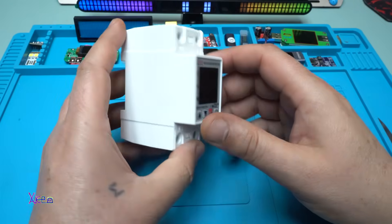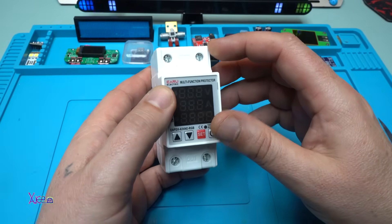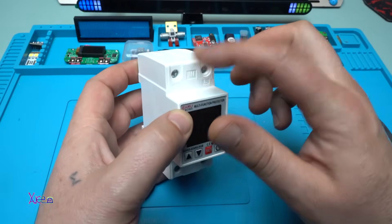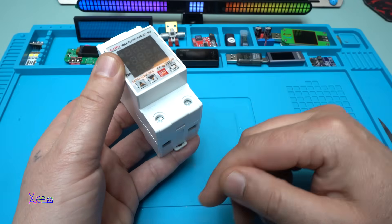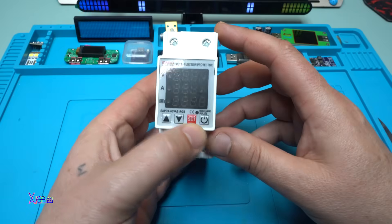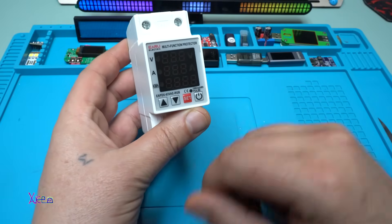So it's ordinary DIN rail module. We have live and neutral connectors on this side, this is input and live and neutral output. That's it. The rest will be set using these four buttons on the module.